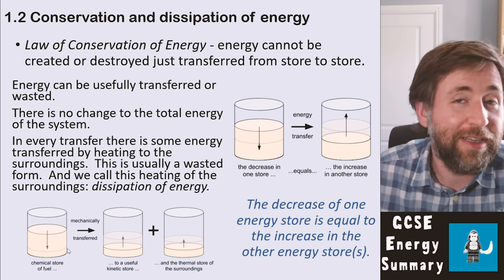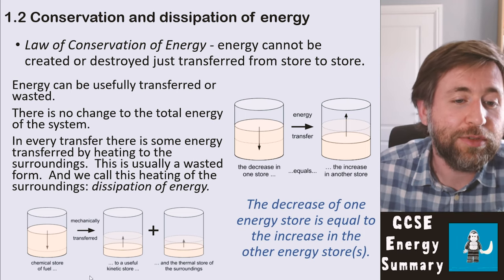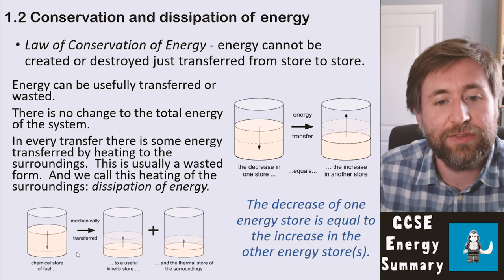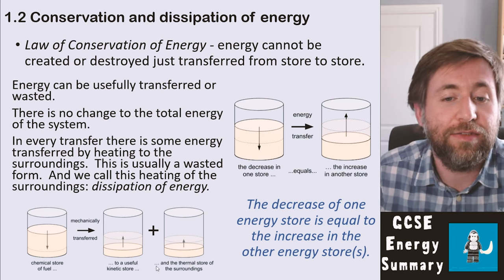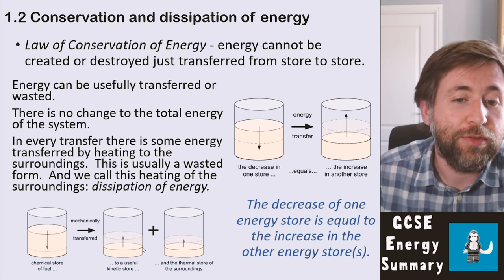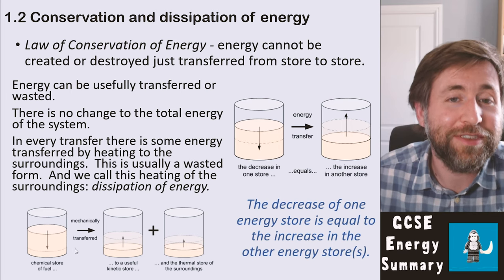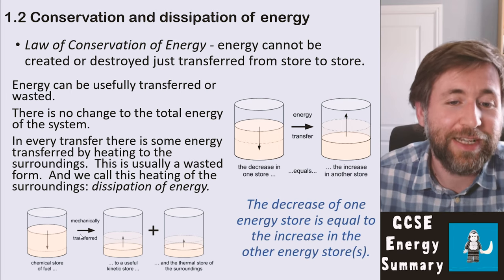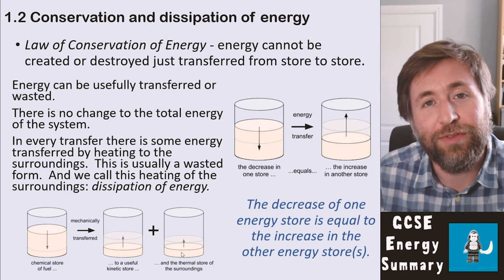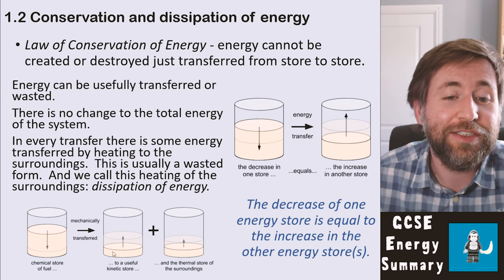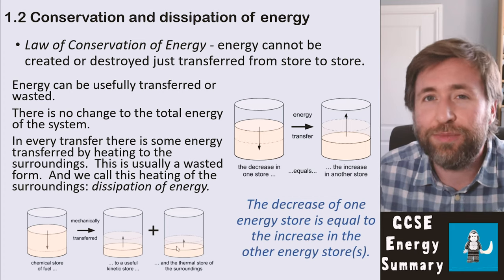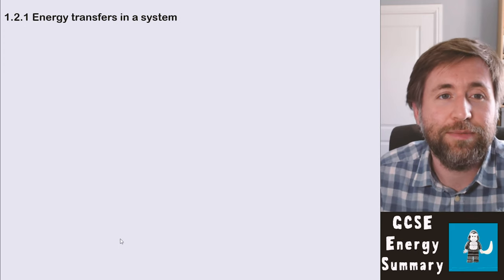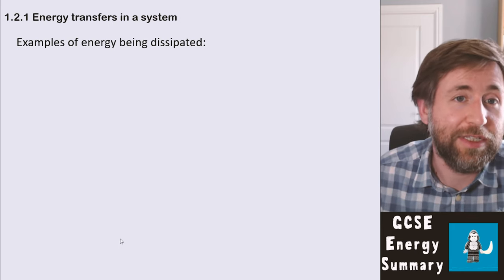For example, in a car, the chemical store of the fuel is mechanically transferred into a useful kinetic store and the thermal store of the surroundings. So the decrease of the starting store equals the increase of the final stores — it's just that the energy goes into two stores, not one. This pretty much always happens and we can't avoid it, but we can limit it.